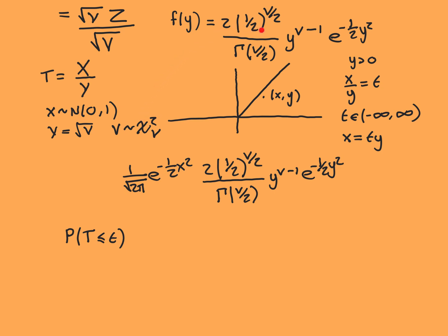You want all points to the left of this line, including everything to the left, wherever this line is for your T value. If T is negative 1, it would be down here, so you just want everything to the left of this line. If T equals 0, you want all of this quadrant. If T equals 1, you'd want all of this quadrant plus this triangle here, but not that other triangle.